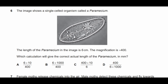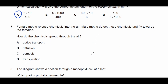Question six: the image shows a single-cell organism called a paramecium. The length in the image is 60 mm and the magnification is 400 times. Which calculation gives the correct actual length in millimetres? First, convert: 6 cm × 10 = 60 mm. Then divide by the magnification to get the actual length. Therefore the answer is A.